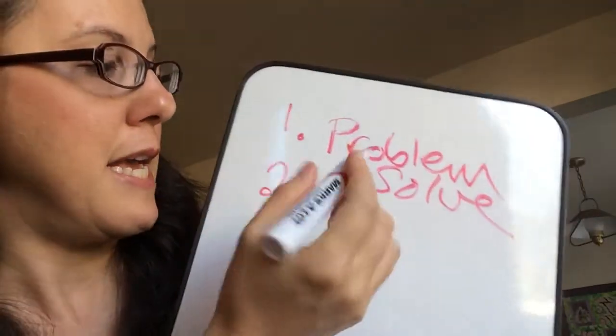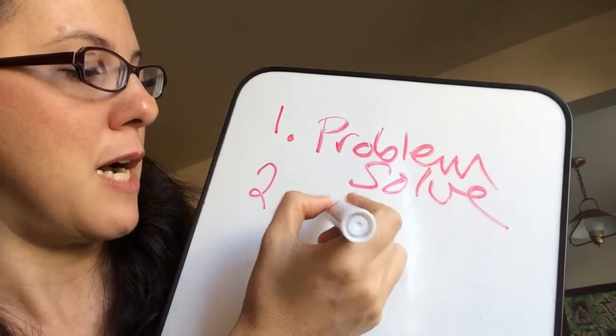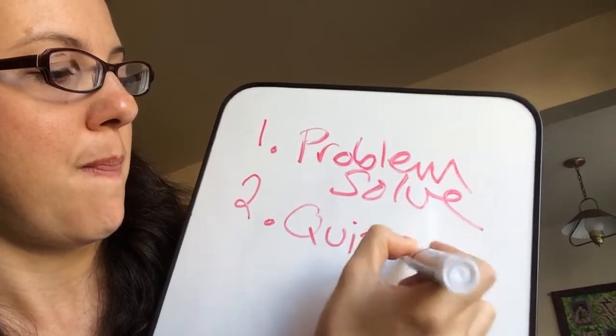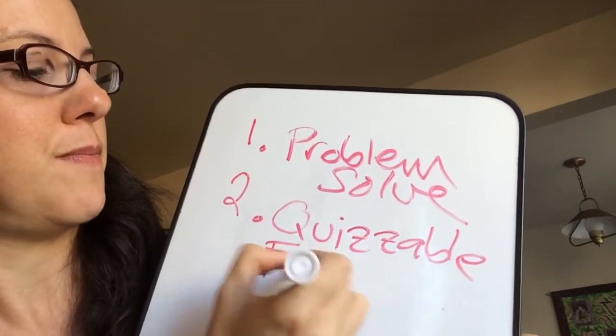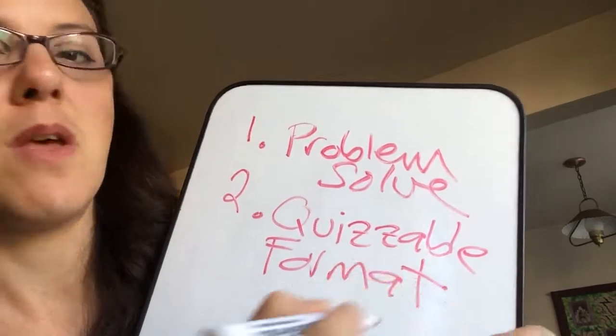The second way is to think about a quizable format. In this situation, you're going to choose a quizable format if you're thinking, I know that I want to be able to test myself to see what I have right and what I have wrong, and so I want to get my notes down in a way that I can quiz myself.